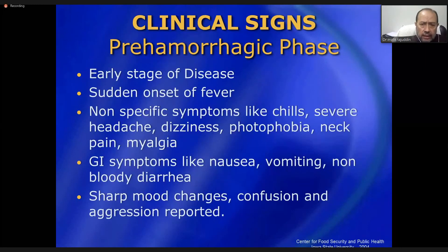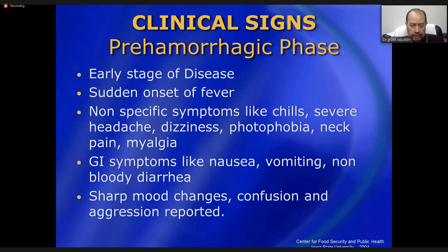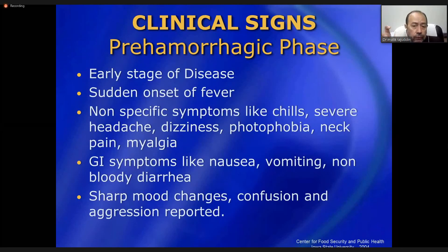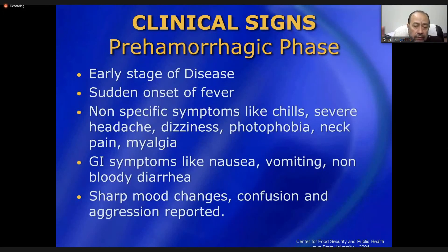There are three clinical stages of CCHF: the pre-hemorrhagic phase, the hemorrhagic phase, and the convalescent phase. In the pre-hemorrhagic phase, there is a sudden onset of high-grade fever with acute body pain. Headache is the more prominent feature in this disease. There is also dizziness, photophobia, neck pain, and myalgia — the neck pain can cause confusion with encephalitis or meningitis.